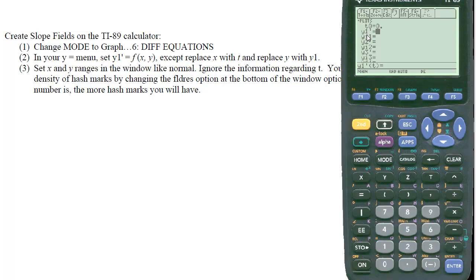We see y1 prime in the Y editor. This y1 prime is the same as saying the derivative of y1 with respect to t. Just like the function editor requires you to use the variable x, this differential equation editor requires y's and t's. We're entering Example 2: dy/dx equals negative xy over 2. So y1 prime equals that expression — replace x with t and y with y1, giving negative t times y1, all over 2.